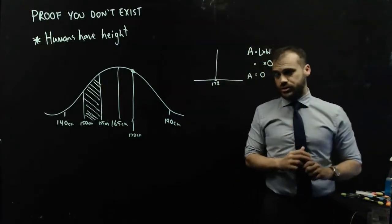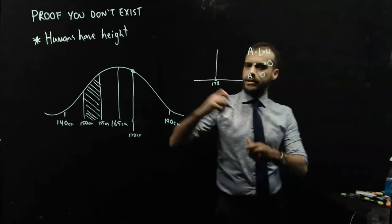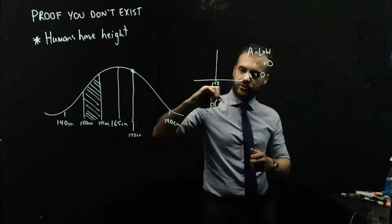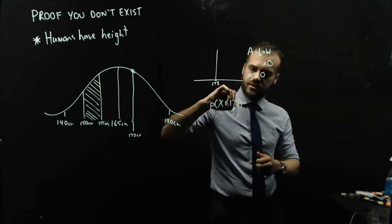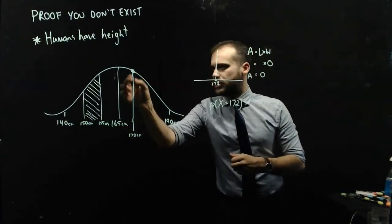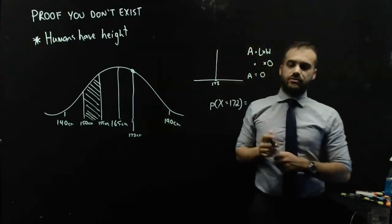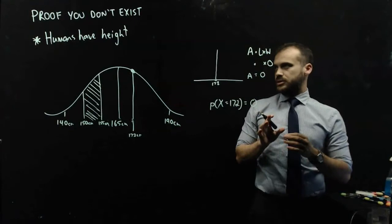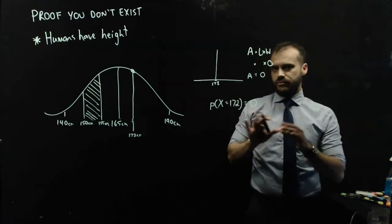And that should concern you. Because the probability that you are exactly 172cm is equal to the area of that very thin rectangle, which appears to be zero. So, you have no height.